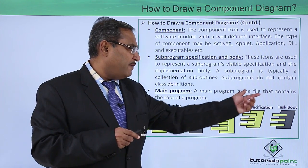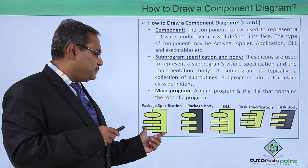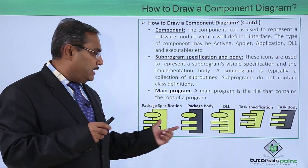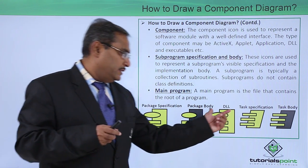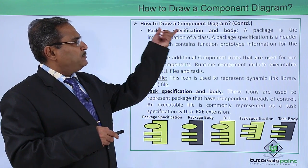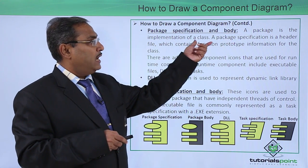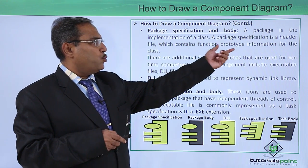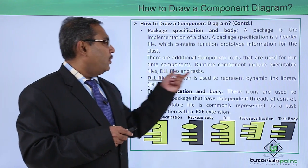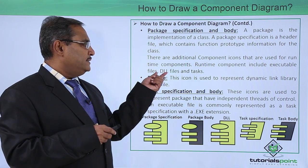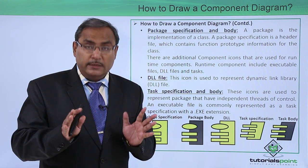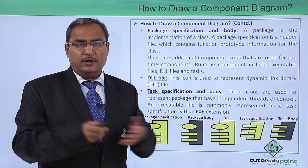Regarding the main program: a main program is a file that contains the root of a program. Here you see there is a package specification and a package body. Specification means class names are written with some specific detailing, and the package body is where the detailed class codes are written. The package is the implementation of a class. A package specification is a header file which contains function prototype information for the class — only the skeleton of the class will be written. There are additional component icons for runtime components, which include executable files, DLL files, and tasks. These are the runtime components — .exe programs that are readily compiled and can be integrated into the main application.